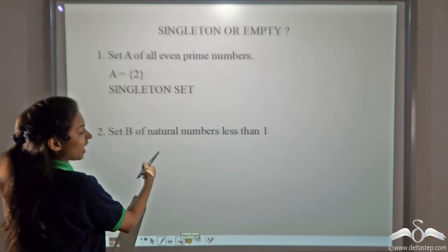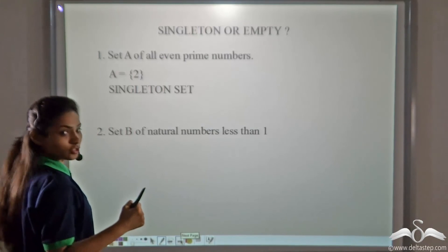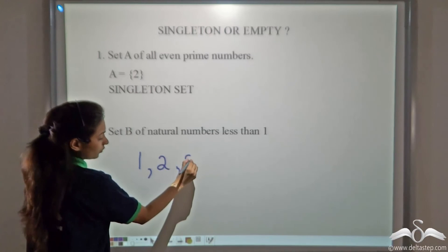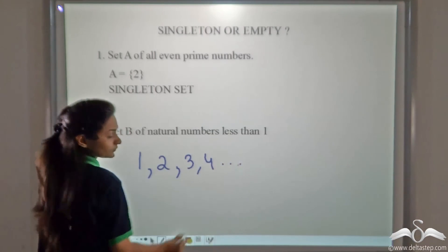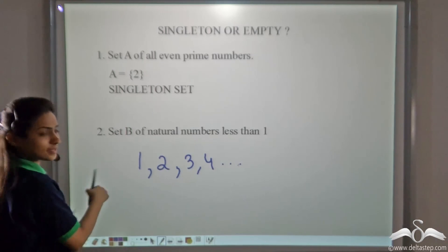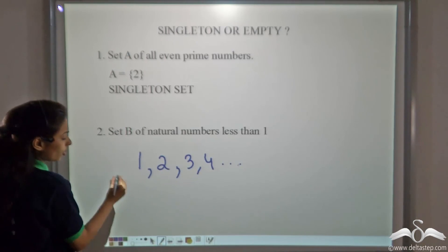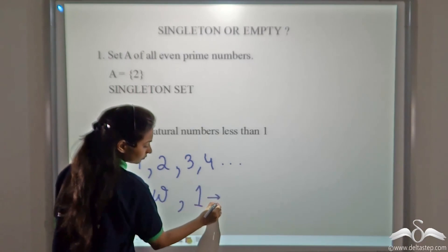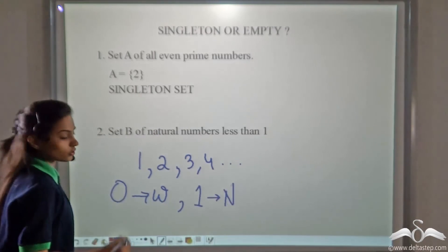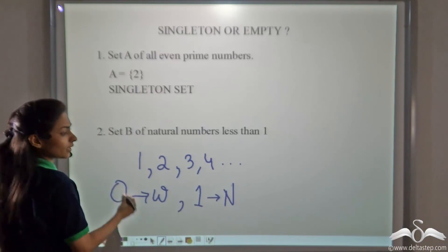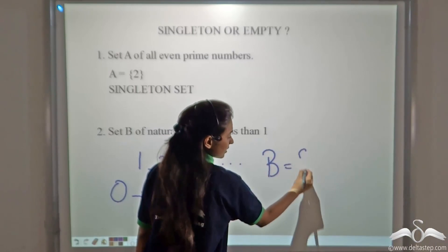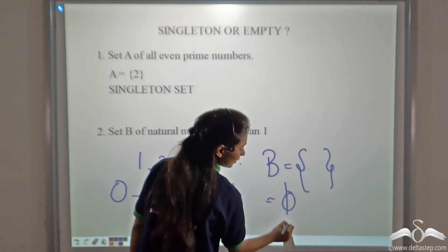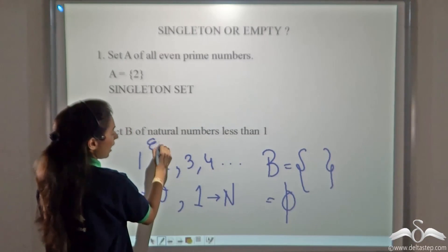Set B of natural numbers less than one. Natural numbers are one, two, three, four, and so on. Are there any natural numbers less than one? No, because natural numbers start from one — there is no natural number below one. So B is an empty set; it has no elements, and can be denoted by the null sign.